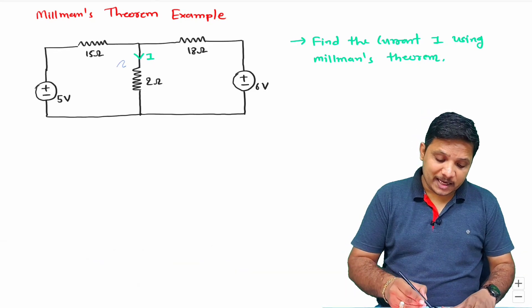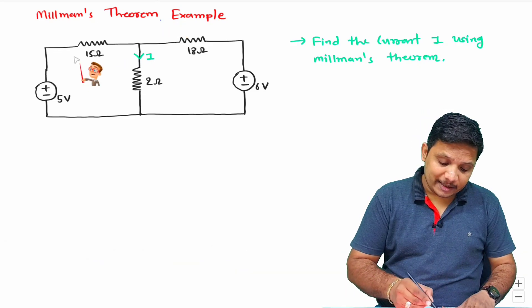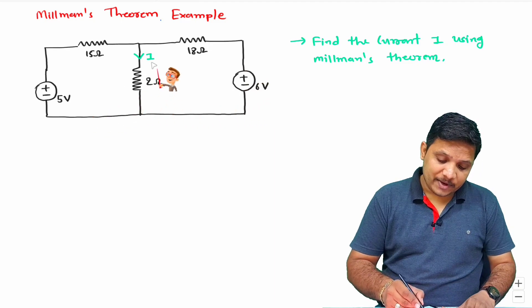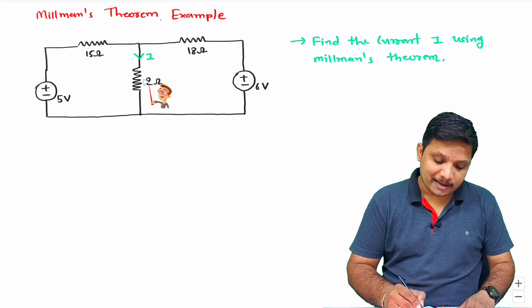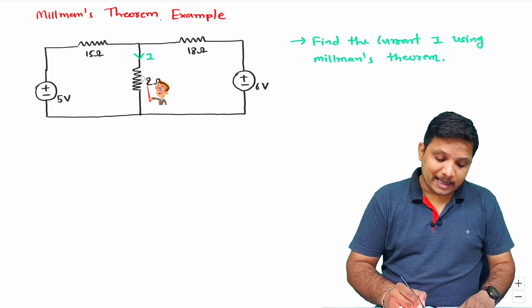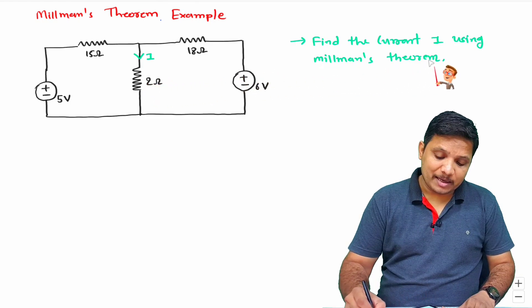Here you see we have been given a circuit. You can observe here we are asked to find current I through the 2 ohm resistor, and we are asked to find it by Millman's theorem.